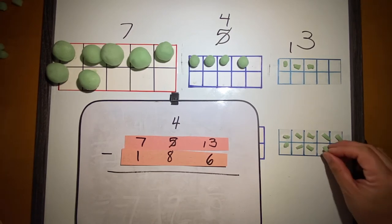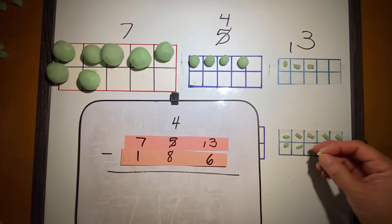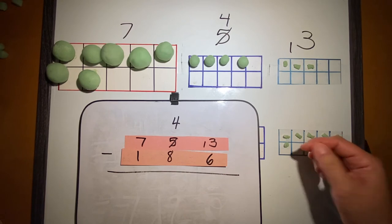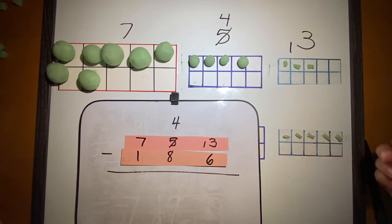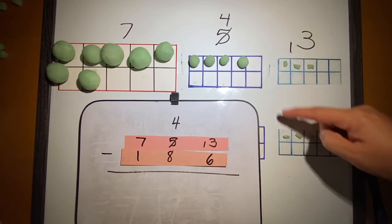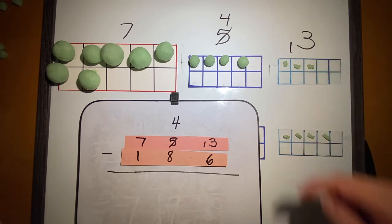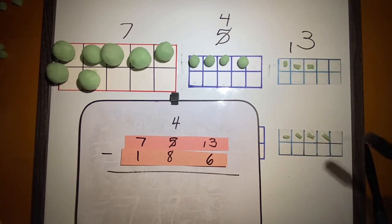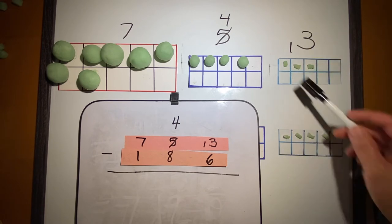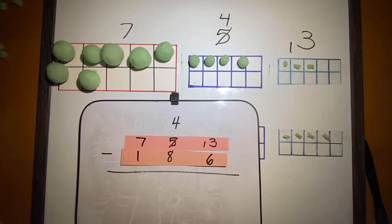So now I can subtract six from thirteen. I can take six from the ones: one, two, three, four, five, six. How many do I have left? One, two, three, four, five, six, seven.